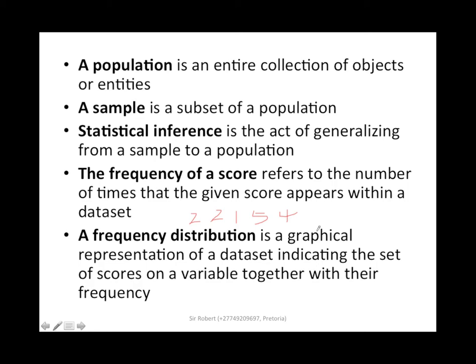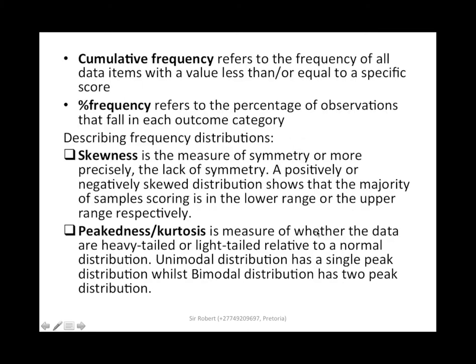A frequency distribution is a graphical representation of a data set indicating the set of scores on a variable together with their frequency. We shall cover different types of frequency distribution in the following chapters. Cumulative frequency refers to the frequency of all data items with a value less than or equal to a specific score — meaning you are adding the previous values up to the current value until it reaches the final frequency.